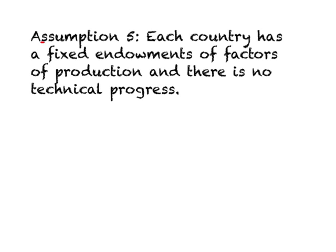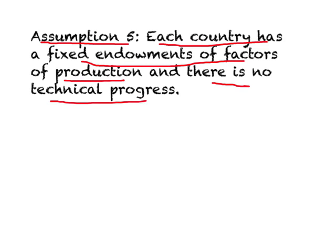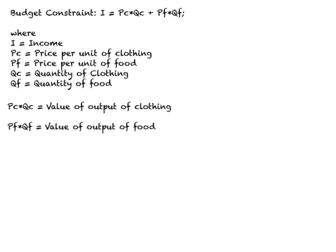We have been trying to understand the fifth assumption needed in order to understand international trade models — that each country has a fixed endowment of factors of production and there is no technical progress. In this lecture video, which is the last covering this assumption, we will figure out exactly how much clothing and how much food is produced by a particular country. For this, we need to revisit the concept of equilibrium on the production side, which we will call production equilibrium.